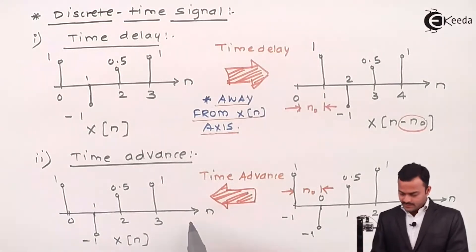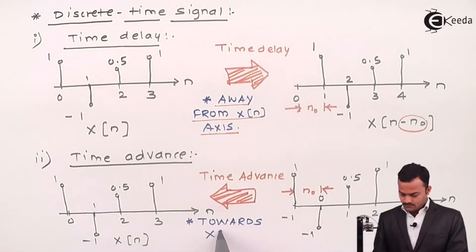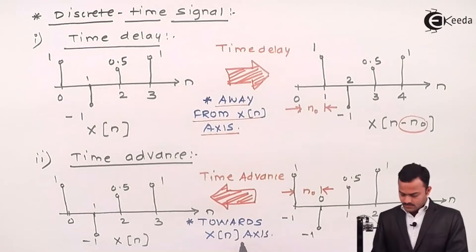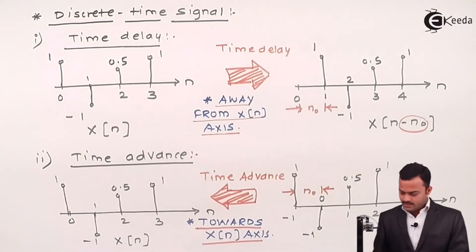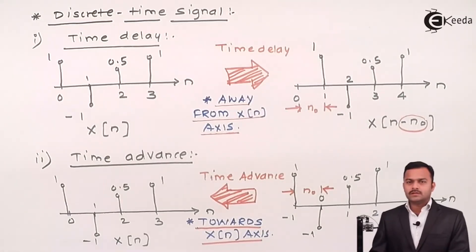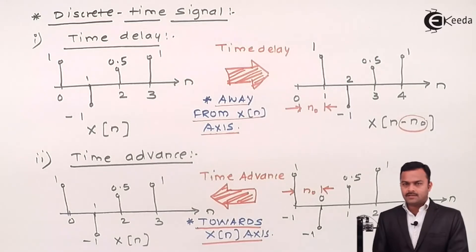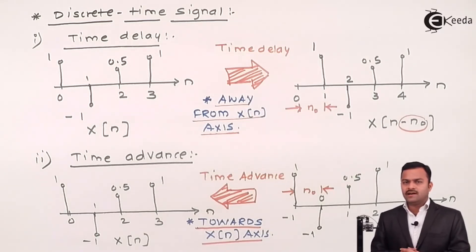So what we can say is: if the signal is moving towards the x of n axis, the signal is advancing. Considering the meaning of advancement, n₀ always has a positive sign. This is what a time-shifting operation of a signal describes. In summary: if you want to delay the signal, it needs to move more away from the vertical axis; if you want to advance the signal, it should move more towards the vertical axis.